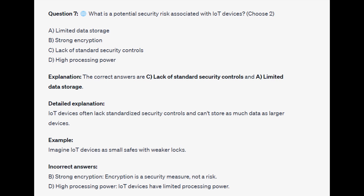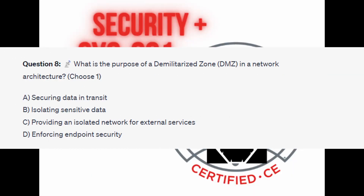For the incorrect answers, strong encryption is a security measure, not a risk. And high processing power is incorrect — IoT devices actually have limited processing power.